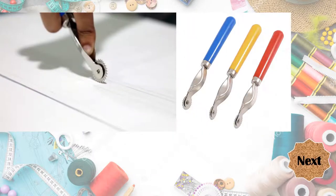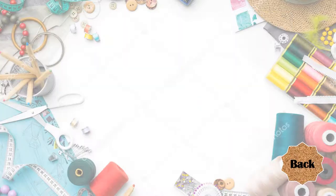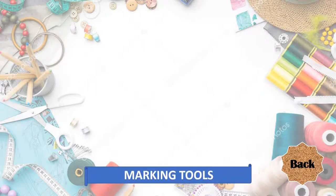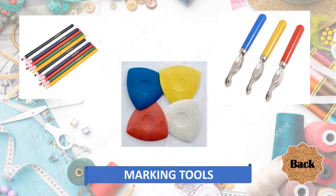Have you encountered using this one? It is the tracing wheel. It has a serrated edge or a smooth edge wheel which produces dots on the fabric and is suitable for transferring marks to the fabric with the tracing paper. So if you are going to transfer marks from the pattern paper to the fabric, you are going to use tracing paper and then the tracing wheel. The most commonly used marking tools are the dressmaker's pencil or dermatograph, the tracing wheel with tracing paper, and the tailor's chalk.